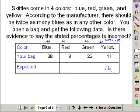20% of 80 is 16, 16, 16, and 32. So those are what we should have had.